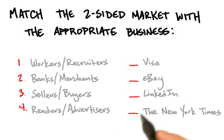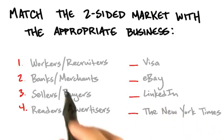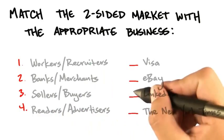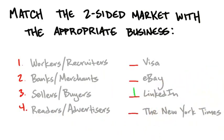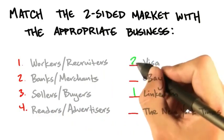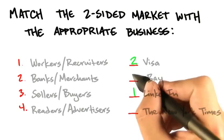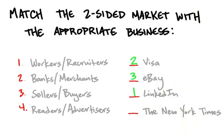So the answer is, for LinkedIn, there are two sides to this market. There are the workers as a customer segment, and there are recruiters. For Visa, you'd have banks and merchants. For eBay, you'd have sellers and buyers. And the New York Times and almost every newspaper, radio, television, Google, you have readers and you have advertisers. So understanding multi-sided markets are just understanding which customer segments in a two-sided market use and which other customer segment pays.